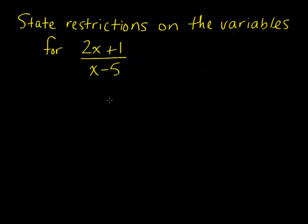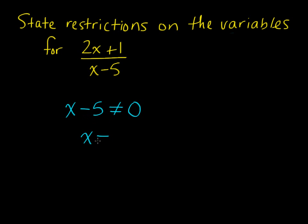For this example we want to state restrictions on the variables. Restrictions are any value of the variable that would make the denominator equal to zero. So we say x minus five cannot equal zero, and we solve to find what value of x makes the denominator zero. This indicates that any time x is five we'll have a denominator equal to zero. So we do not want x to equal five — that is our restriction.